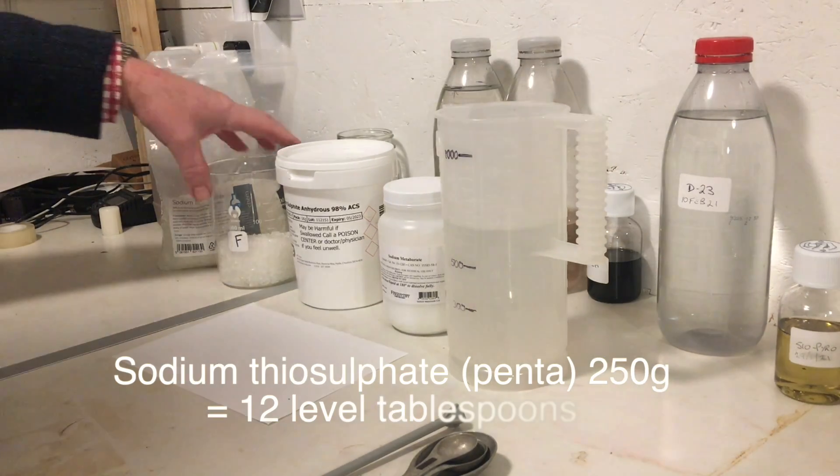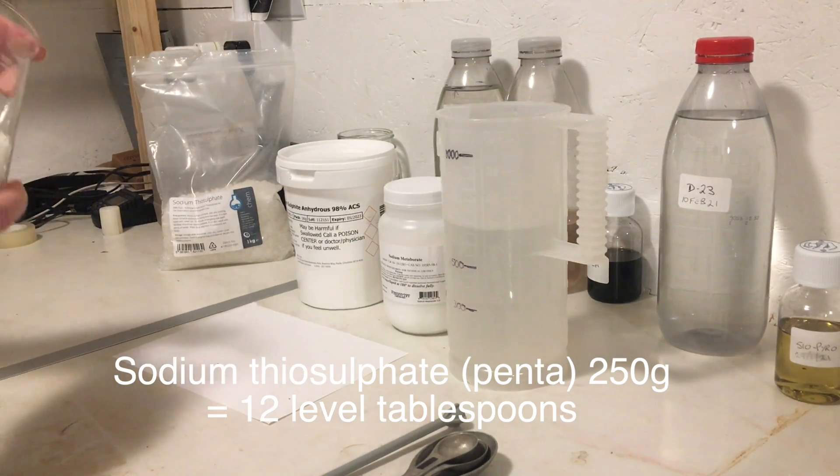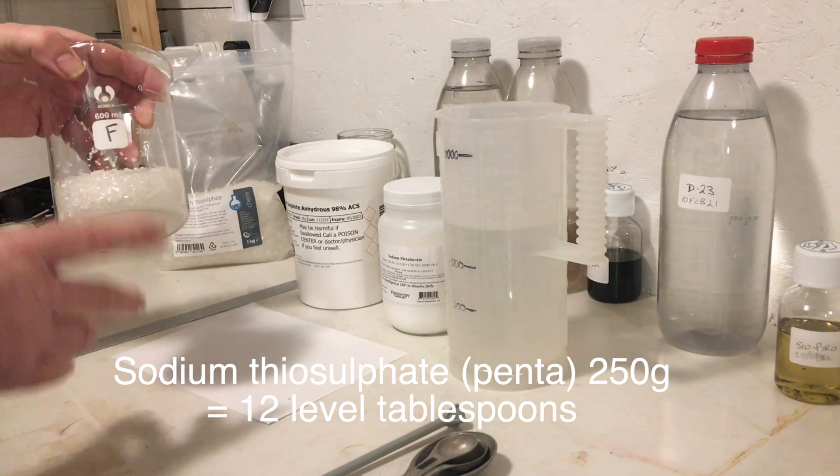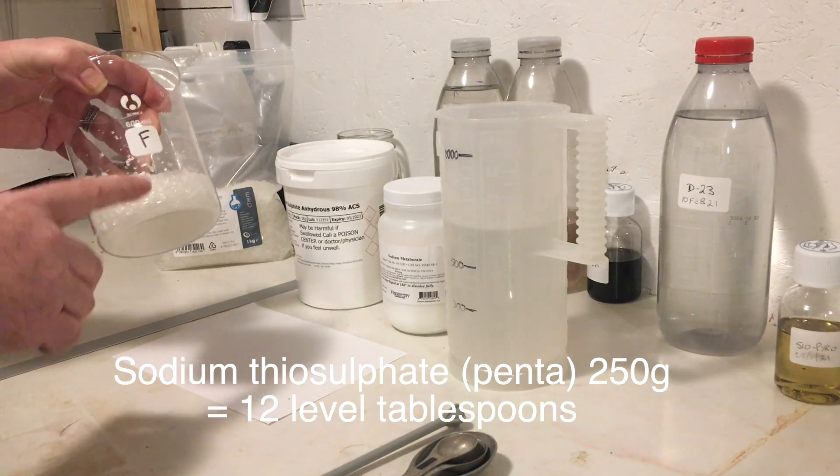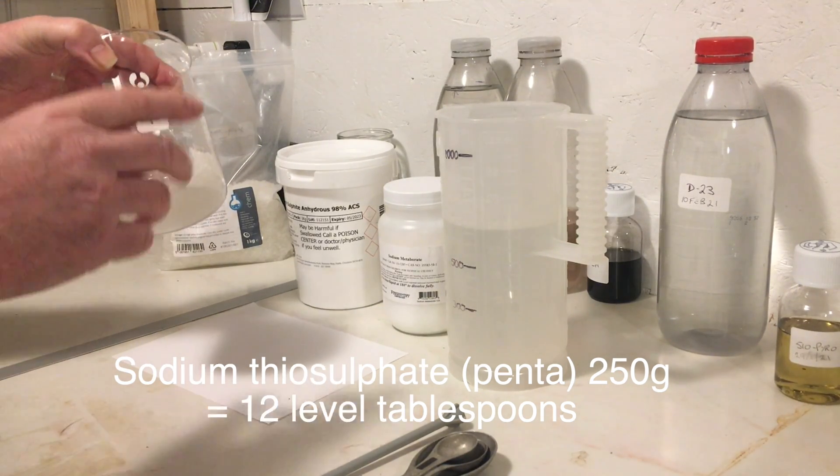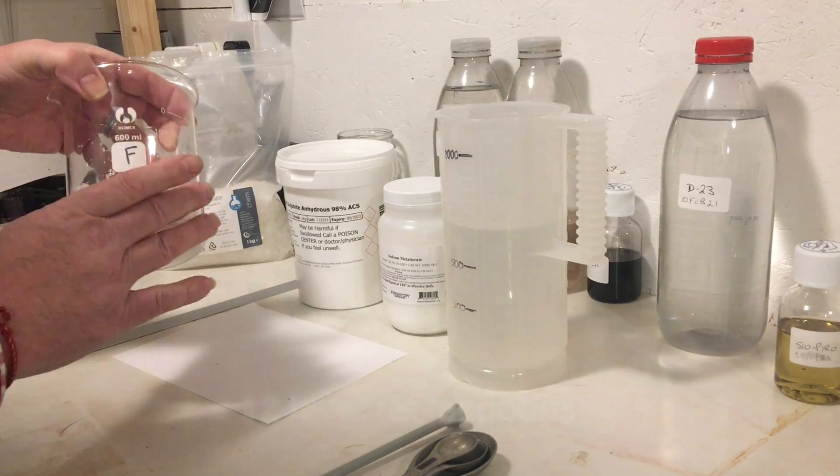Here we are. Now I've already pre-measured the sodium thiosulfate. And this is 250 grams of the thiosulfate pentahydrate. And that was 12 tablespoons.